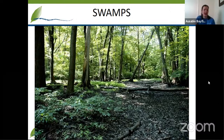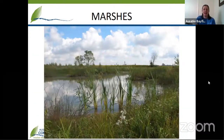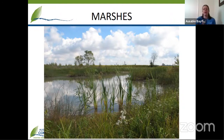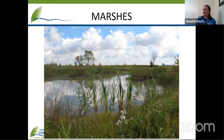The other type of wetland we have in the ABCA's area are marshes. Marshes are sort of like an open pond that happens in a field, and mostly the vegetation all around that marsh is going to be non-woody plants — meaning no trees and no shrubs. There's going to be lots of grasses, flowers, sedges, and other aquatic plants.